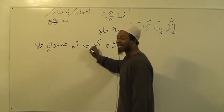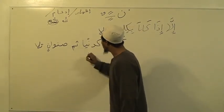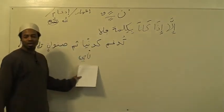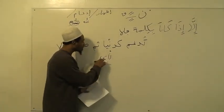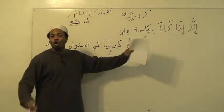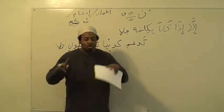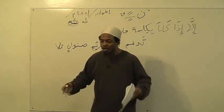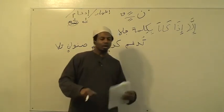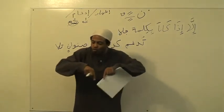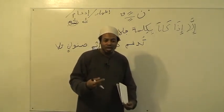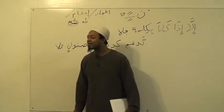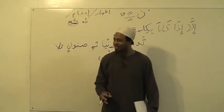كِلْمَةٍ فَلَى — a ya comes after the noon. Here we have a noon, which is second, with a ya that is mutaharrik. We don't make Gunnah here. Why? Because they are in one word. Gunnah is only between two words. If it comes in the same word, there is no Gunnah. You pronounce the noon clearly and independently, like Idh-haar. You don't mix the sound.